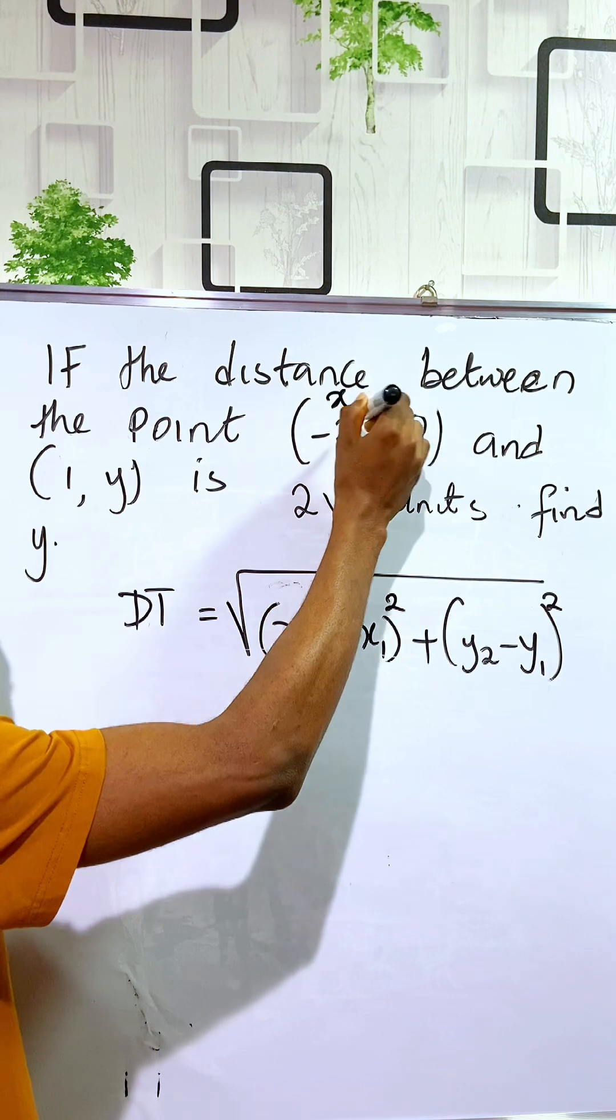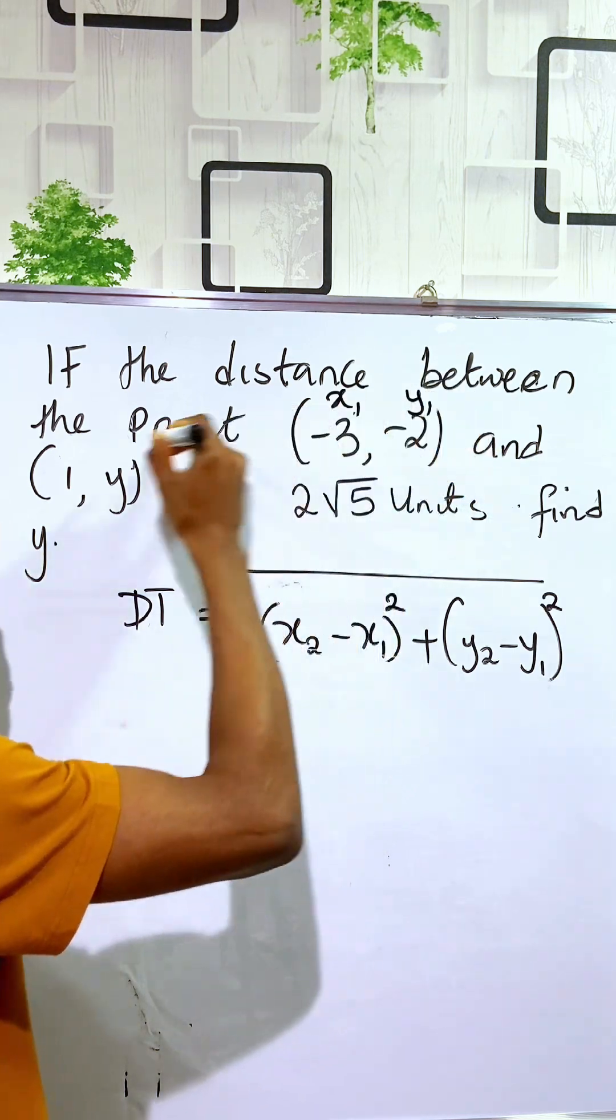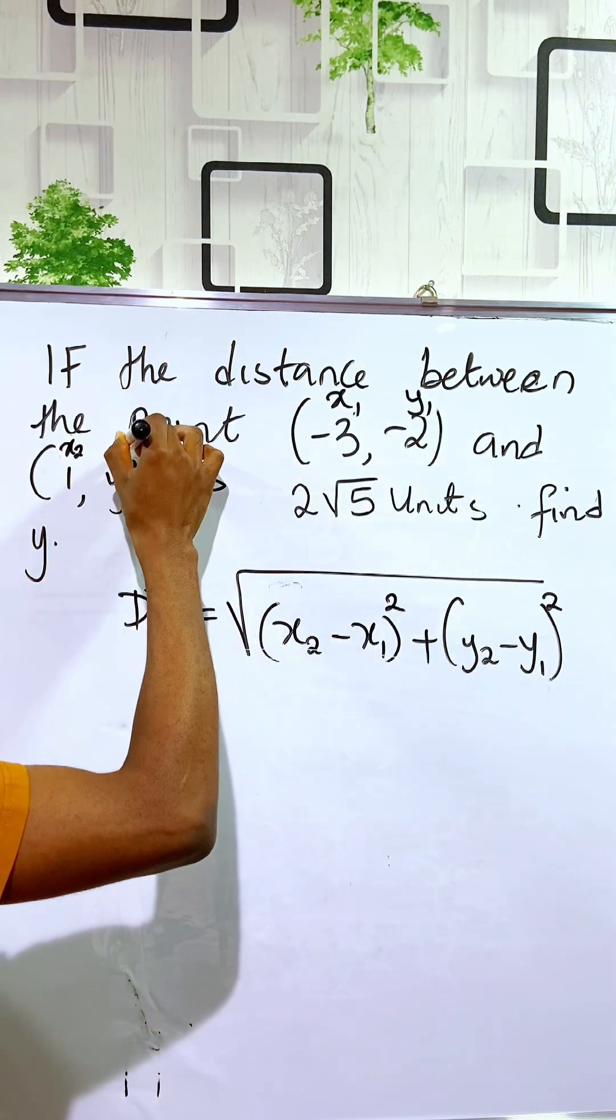This is the first point, which is the x1 and this is the y1, this is the x2 and this is the y2.